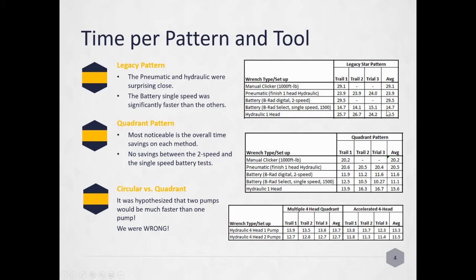If you look at the legacy pattern, it's really between the pneumatic at 23 minutes, battery single speed at 14, and hydraulic at 25. We were shocked that the pneumatic was real close to the hydraulic. Then we used the quadrant pattern and the most normal thing you will see is how much time you save with each method.